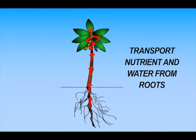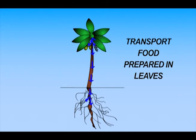Major function of stem is to transport nutrient and water from root to different parts of plant. It also transports food prepared in leaves to different parts of plants.